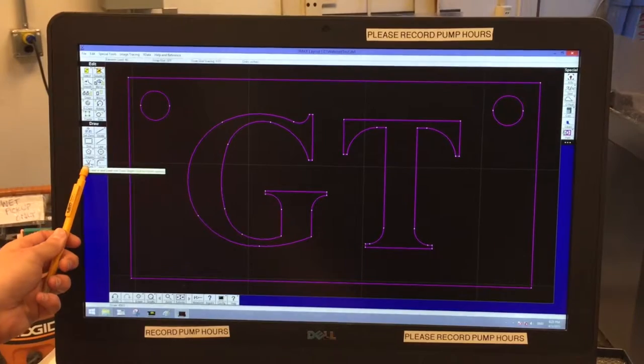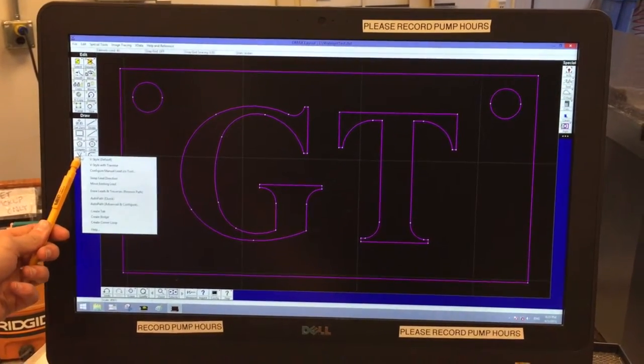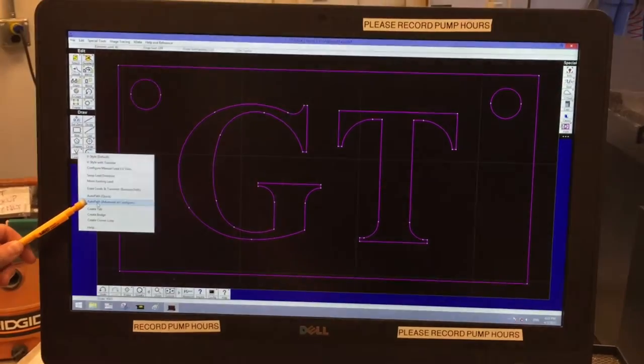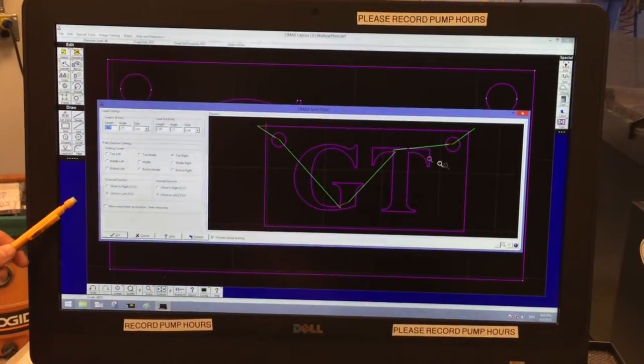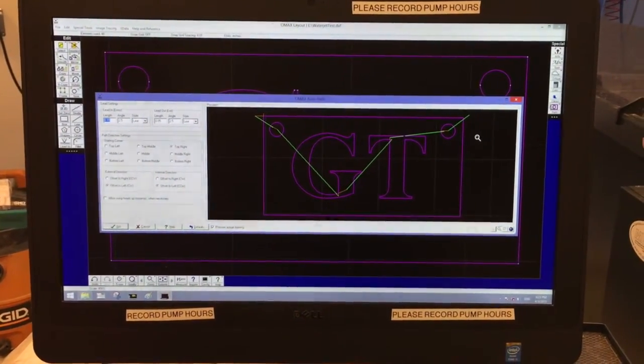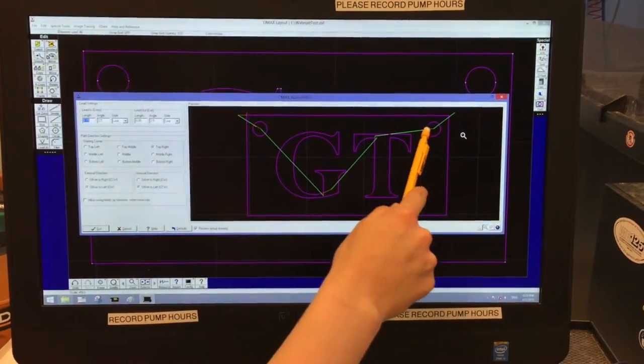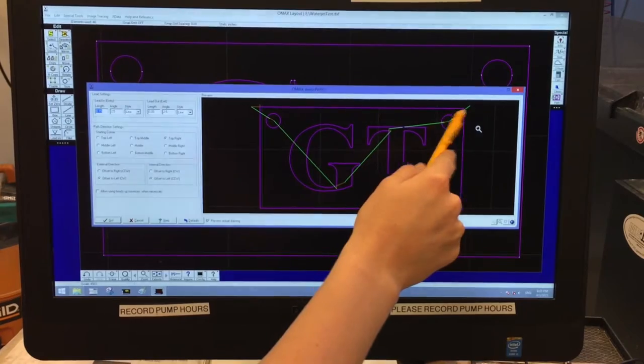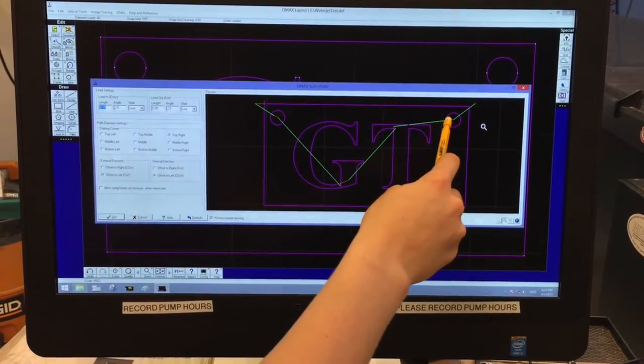And now right click on Lead I/O on the left side of the screen and click Auto Path, Advanced and Configure. And this adds what are called traverse lines and lead-ins. Traverse lines are where the nozzle moves without cutting. And lead-ins are where it starts its cut.